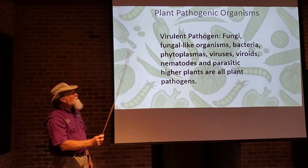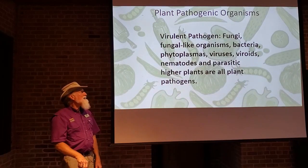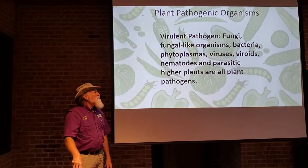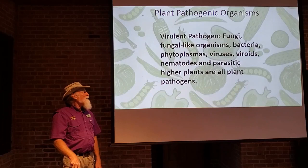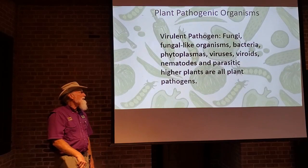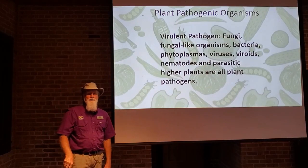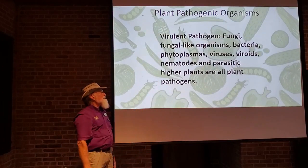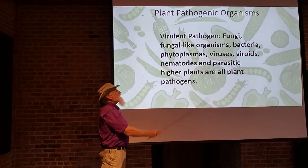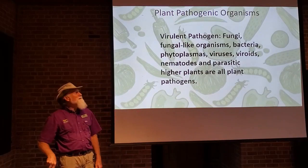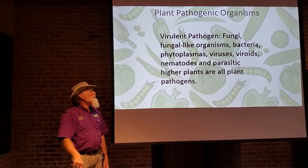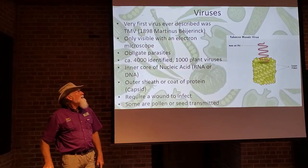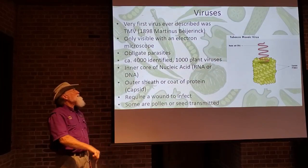The virulent pathogens include fungi, fungal-like organisms, bacteria, phytoplasmas, viruses, viroids, nematodes, and parasitic higher plants — these are all plant pathogens. We already talked about nematodes, and parasitic higher plants, there are only a couple of those, so we won't cover those today. We're going to concentrate mainly on viruses, bacteria, and fungi, so let's look at some of these viruses.